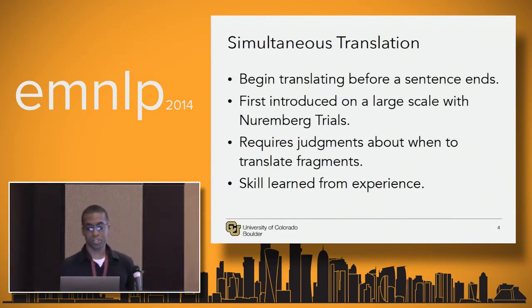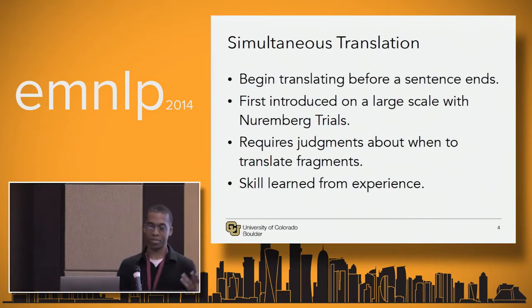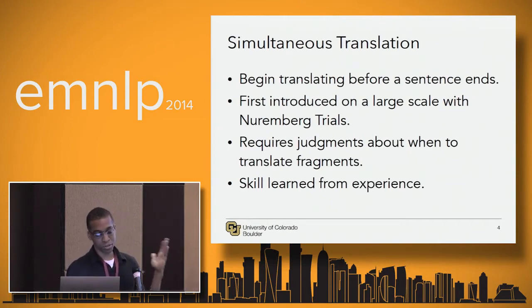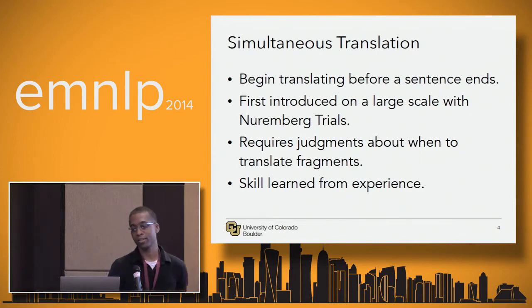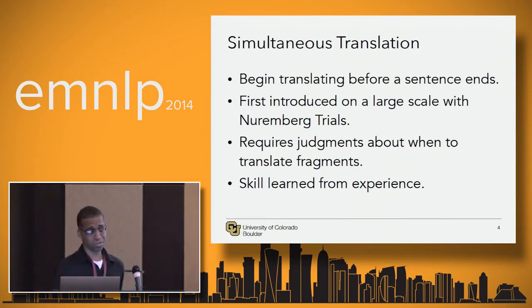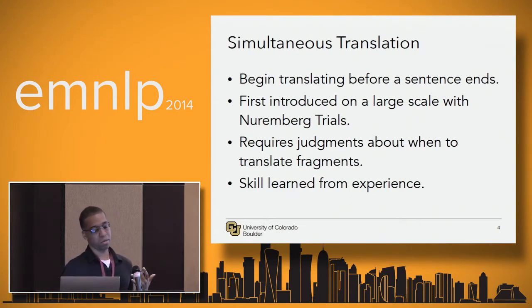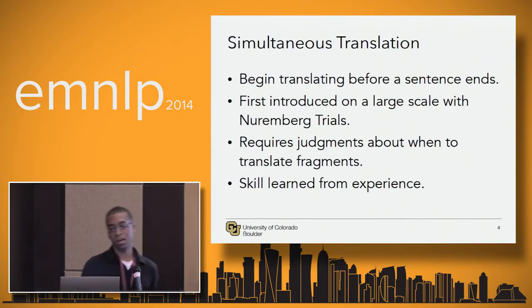So what is simultaneous translation? It's when text or speech — in our case, text — when words are coming in and we want to translate incrementally. We don't wait until the sentence is complete to start translating. This was first introduced during the Nuremberg trials on a large scale. When people do this, it requires a lot of experience and training, and it's actually very mentally taxing.